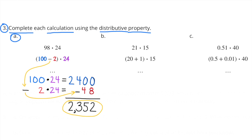Number 3. Complete each calculation using the distributive property. A: 98 times 24. We can look at 98 times 24 as 100 minus 2, times 24. 100 times 24 equals 2,400. 2 times 24 equals 48. So, 2,400 minus 48 equals 2,352. So, 98 times 24 equals 2,352.